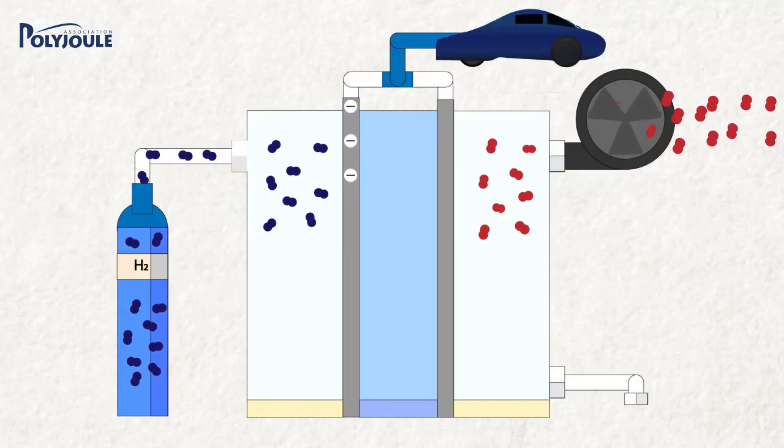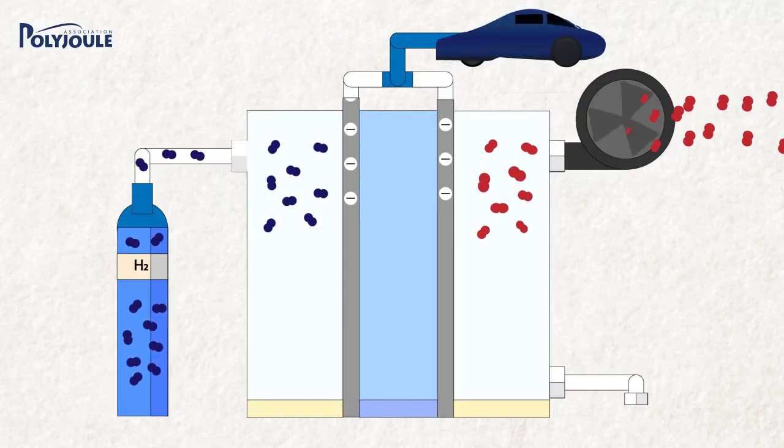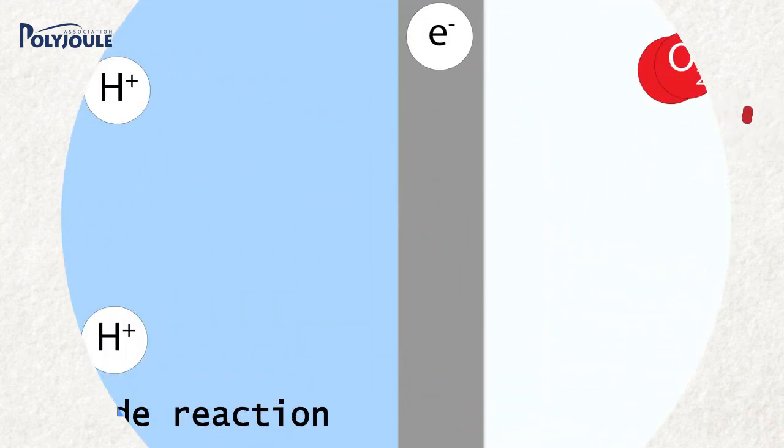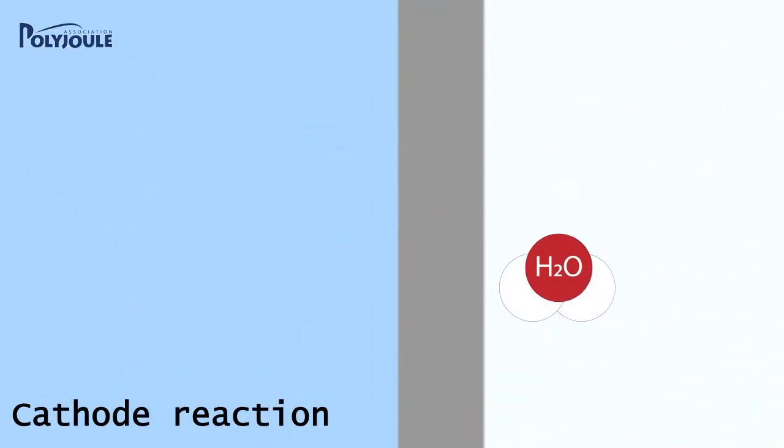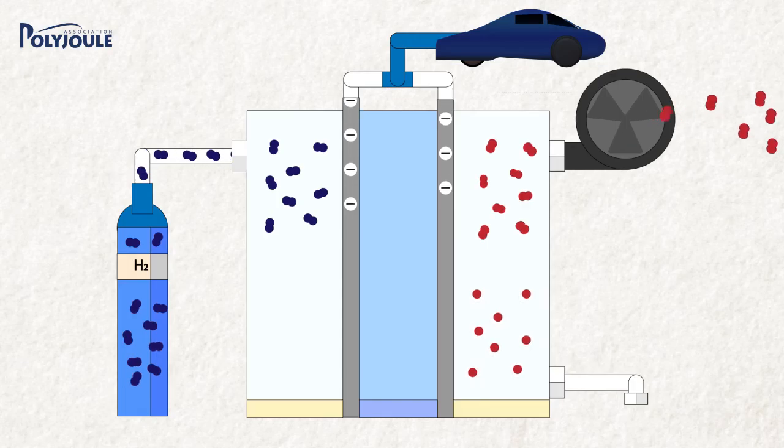Electrons have to circulate through electrodes, creating an electric current. At the cathode side, protons meet electrons and oxygen to create water.